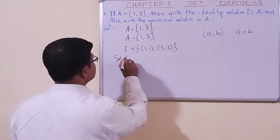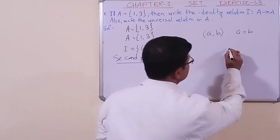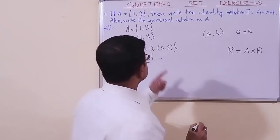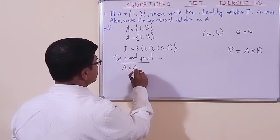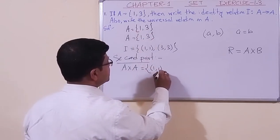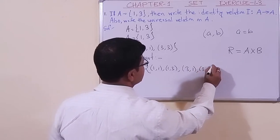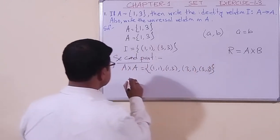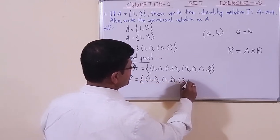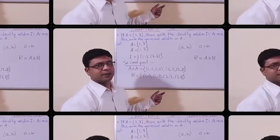Now the second part: write the universal relation on A. We know that the universal relation is nothing but the Cartesian product of the two sets. So let us find A cross A. We pair 1 with 1, 1 with 3, 3 with 1, and 3 with 3. The universal relation is {(1,1), (1,3), (3,1), (3,3)}. The solution is so simple.